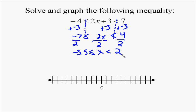Again, this is an AND inequality, so we plot both cutoff points. We're going to plot negative 3.5. We're going to make it a closed circle, right there between negative three and negative four. And then we're going to plot two, and it's going to be an open circle.